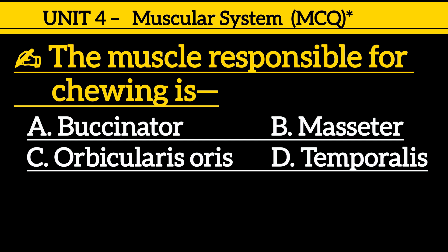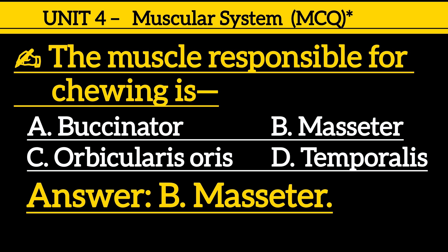Next one is: the muscle responsible for chewing is — option A: buccinator, option B: masseter, option C: orbicularis oris, option D: temporalis. Correct answer is option B, masseter.